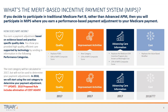The quality performance category replaces PQRS and counts for 60% of your MIPS composite score. Improvement activities is a new concept counting for 15%. Advancing Care Information — ACI — replaces Meaningful Use and accounts for 25% of your MIPS composite score. Cost replaces the value-based payment modifier; you're not being scored on cost in 2017, and in the 2018 proposed rule they're also talking about not counting cost yet — a little bit of good news.